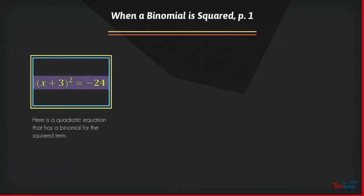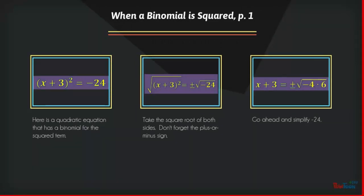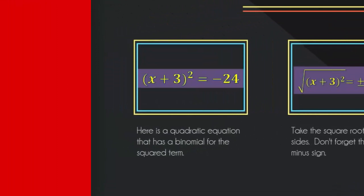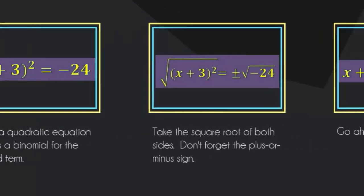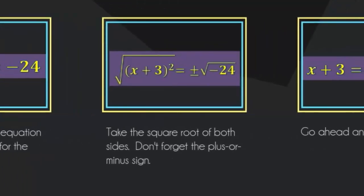Now for a really complicated problem. What do you do when a binomial is squared like here? We have x plus 3 quantity squared equals negative 24, a negative constant. When we take the square root of both sides, we're going to be taking the square root of a negative number, which means we get kicked smack dab into the complex number system.